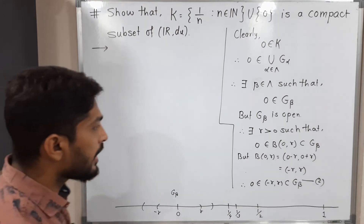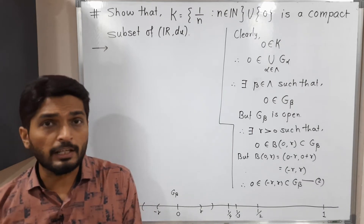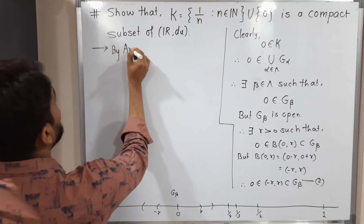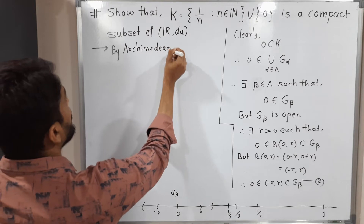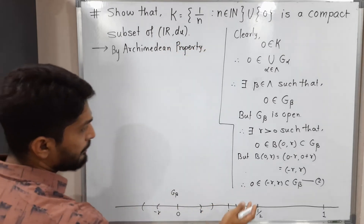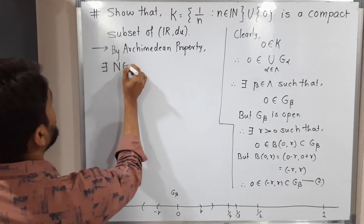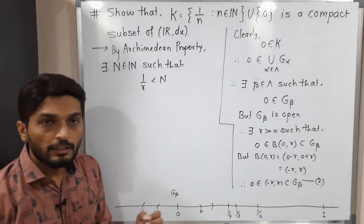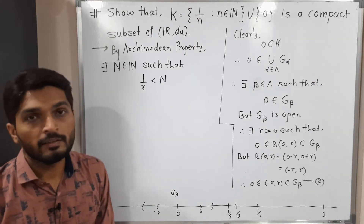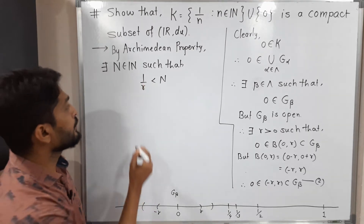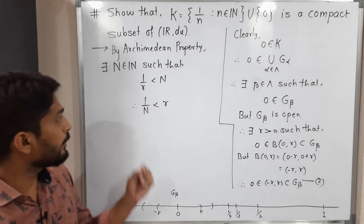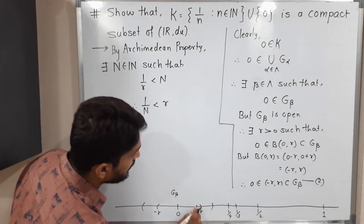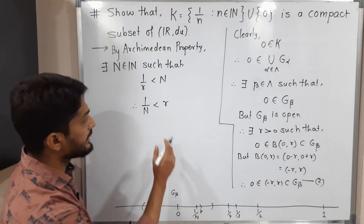So now I'm going to use the Archimedean property. Do you remember the Archimedean property? That property says: if you have any real number, we can definitely find a natural number greater than it. So by the Archimedean property, taking 1/r as our real number, there exists a natural number N such that 1/r < N. Interchanging, we get 1/N < r.